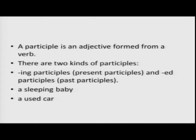Moving on, we look at the use of participles and gerunds. A participle is used as an adjective formed from a verb. There are two kinds: 'ing' participles, also known as present participles, and 'ed' forms, also known as past participles. Look at examples: 'a sleeping baby' — 'sleeping' is the present participle from the verb 'sleep'; 'a used car' — 'used' is the past participle from the verb 'use.'